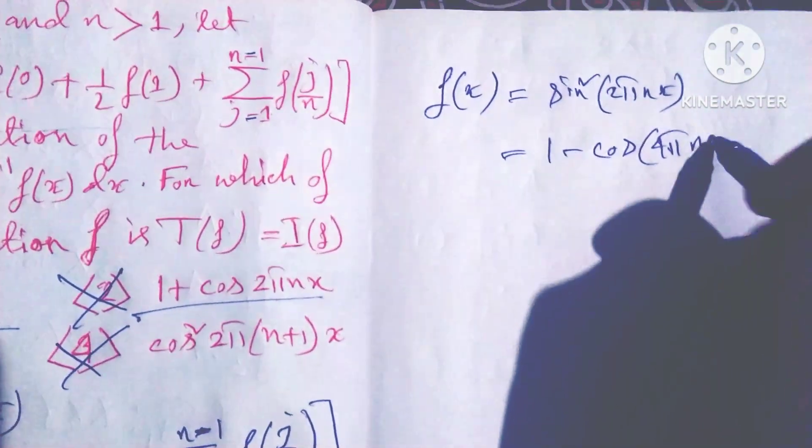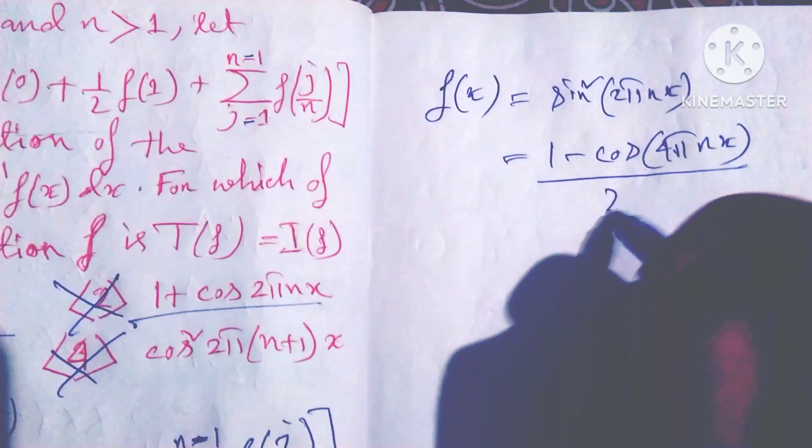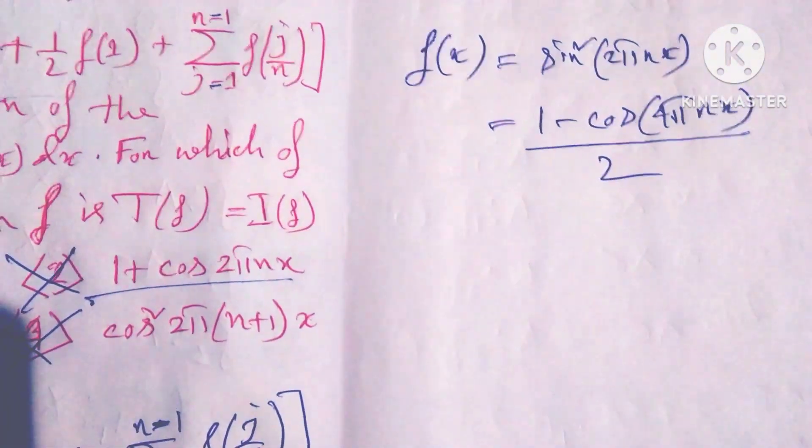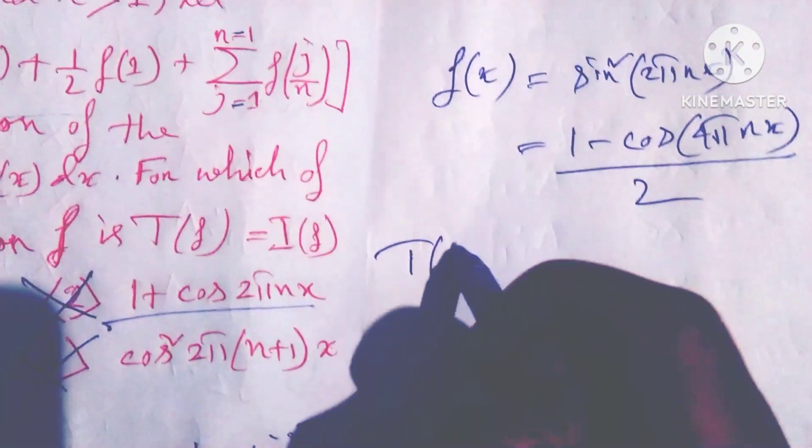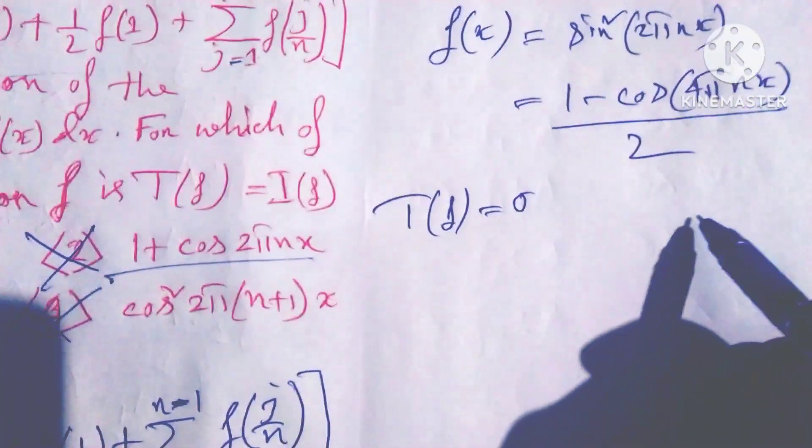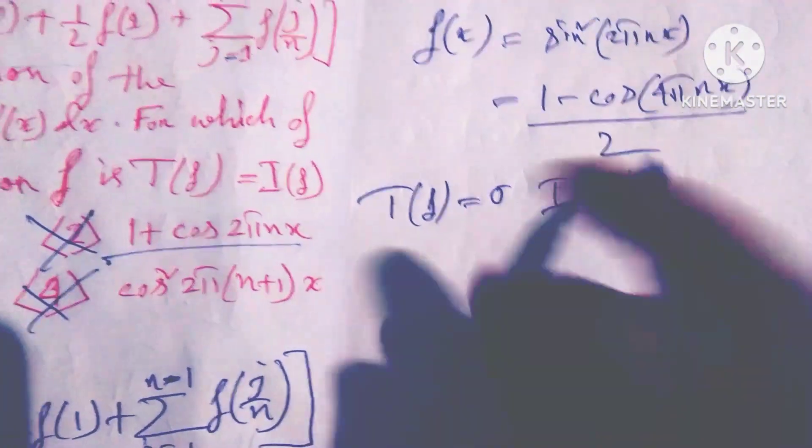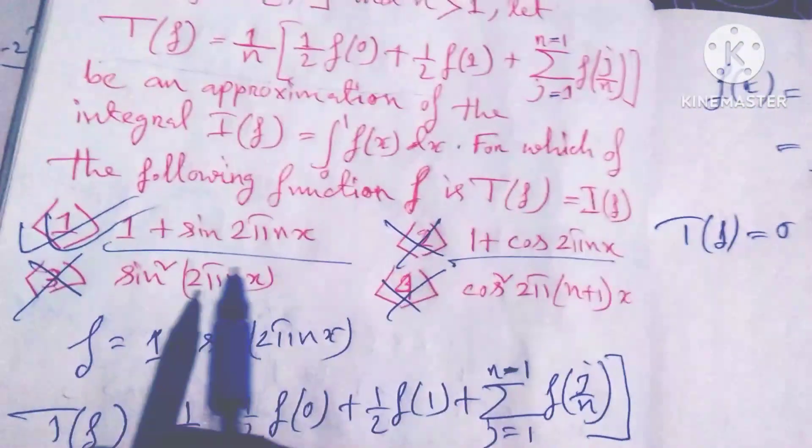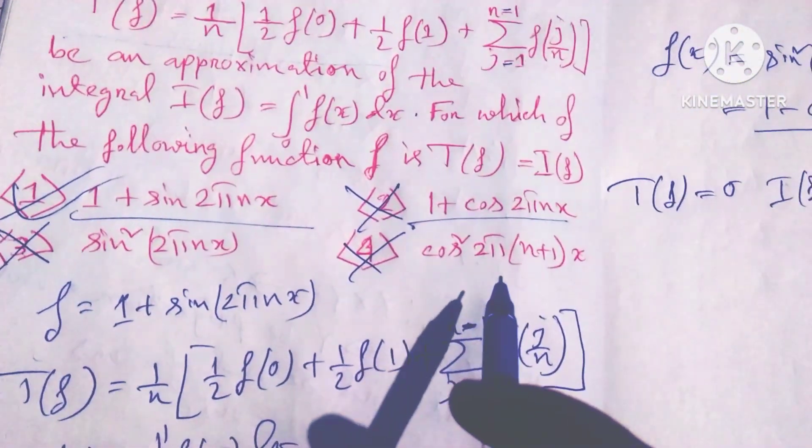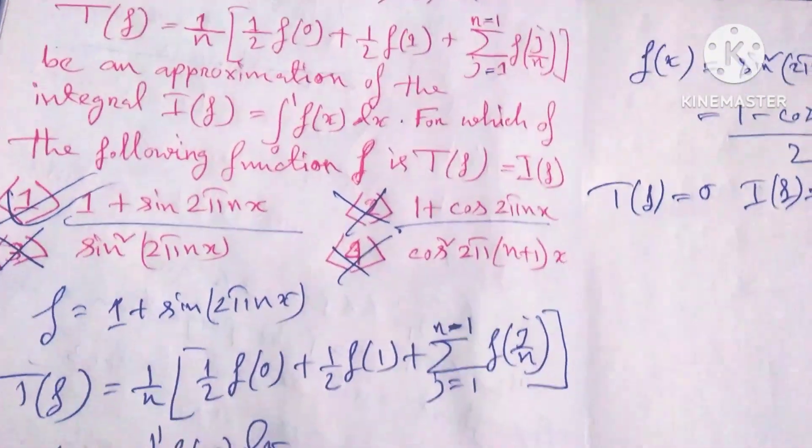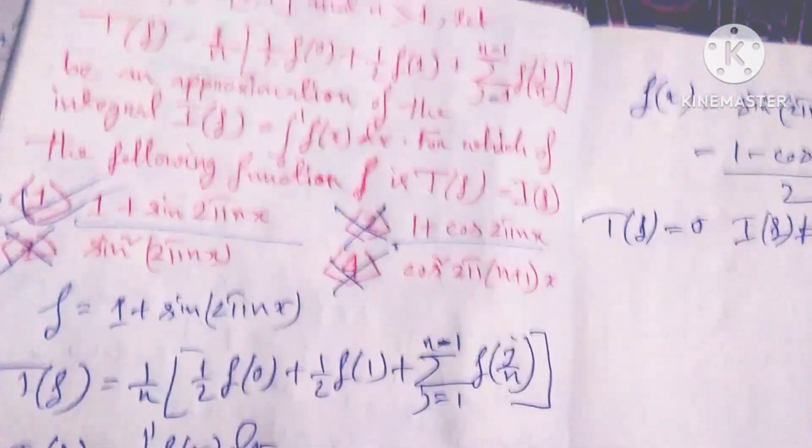equals (1 minus cos 4πnx) divided by 2, and T(f) equals 0 and I(f) does not equal 0. So friends, we see that option 3 and 4 is same case, same type problem. It is not correct.